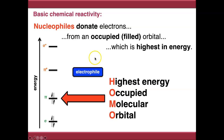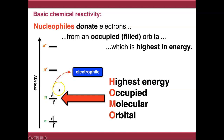If we bring an electrophile into proximity of our molecule, the electrons that are going to attack it come out of the HOMO, which in this case is the pi bonding orbital. This also introduces us to curly arrows — a double-headed curly arrow shows the movement of a pair of electrons, and that's what we'll be dealing with in this module.